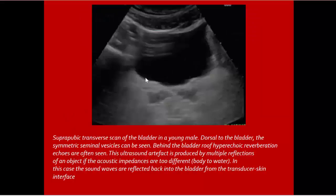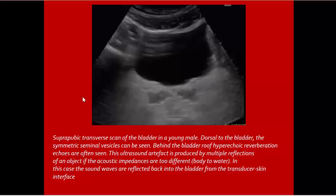Suprapubic scan of the bladder shows dorsal structures, symmetric seminal vesicles. Behind the bladder roof, hyperechoic reverberation echoes are seen. This is an ultrasound artifact produced by multiple reflections between objects of different acoustic impedance, such as body tissue to water. Sound waves are reflected back into the bladder from the transducer-skin interface.